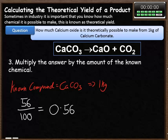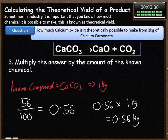Our final step is to multiply the answer we've got from that part by the amount of the known chemical. I know that I've got 1 kilogram of calcium carbonate, and I need to find out how much calcium oxide I've got. So I take 0.56 and I multiply it by 1 kilogram, and that tells me that I have 0.56 kilograms of calcium oxide produced from this reaction.